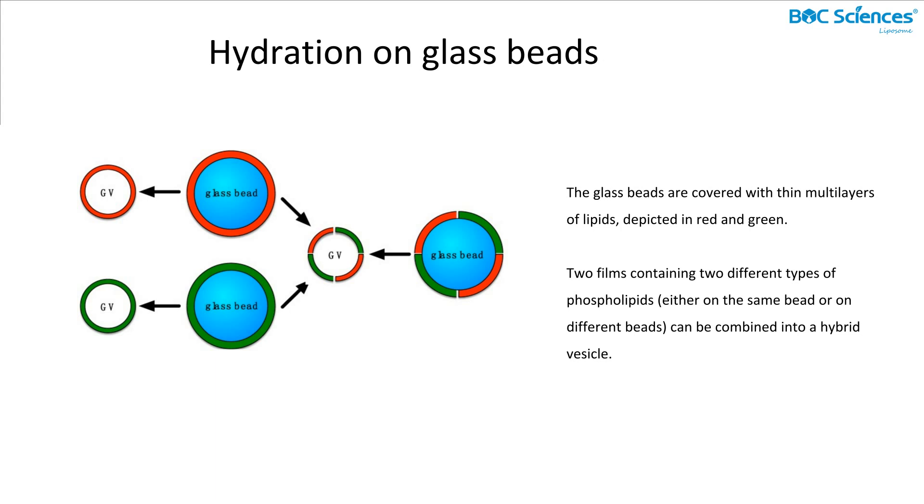Tanisescu et al. reasoned that a concurrent shaking step would generate comparatively more monodispersed GUVs because the formation of liposomes should be shared between the beads.